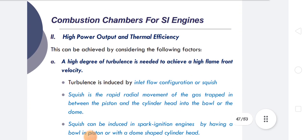The next factor is high power output and thermal efficiency. High thermal efficiency in turn requires a high compression ratio. A small heat loss during combustion — which means a small surface-to-volume ratio — is required. This is achieved by a compact combustion chamber, which provides a small surface-to-volume ratio and decreases heat loss.